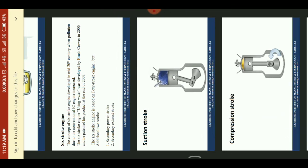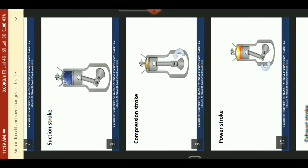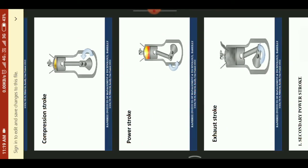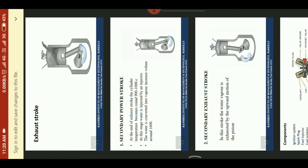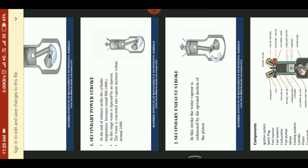The secondary power stroke is a suction stroke and compression stroke, then power stroke and exhaust stroke. In the 6-stroke engine, the one additional stroke is called the secondary power stroke. At the end of the exhaust stroke in the 4-stroke engine, the temperature becomes around 900 to 1000 degrees Celsius. At this stage, water is injected by an injector. The water is converted into vapor and the volume increases by around 1600 times.